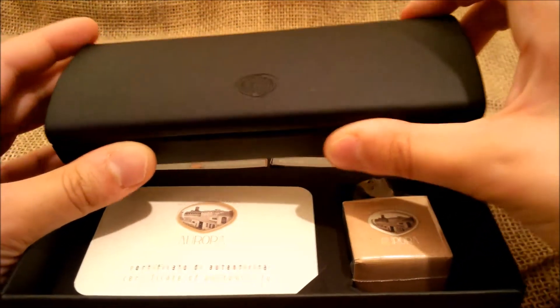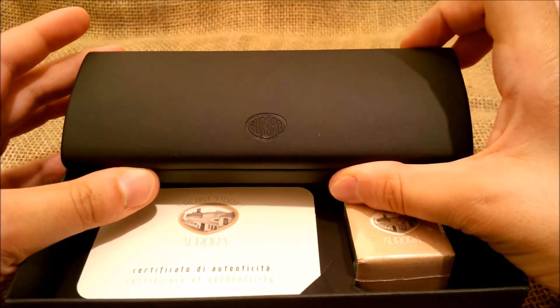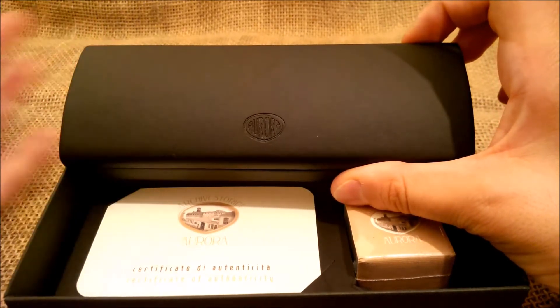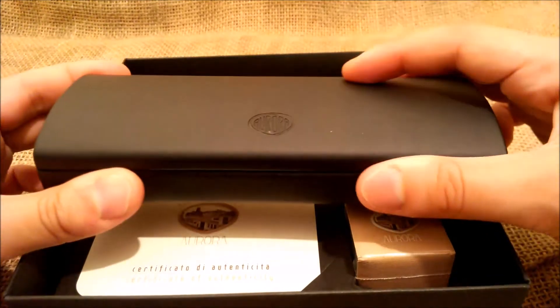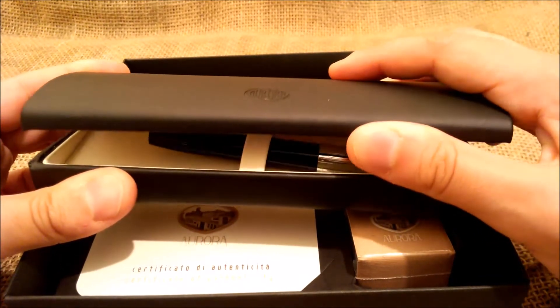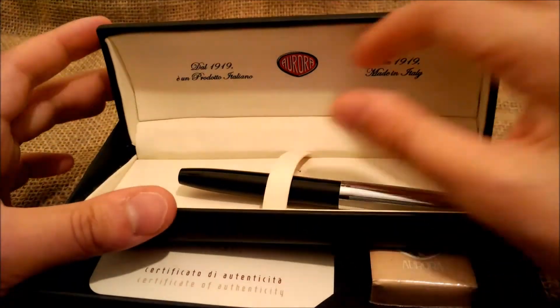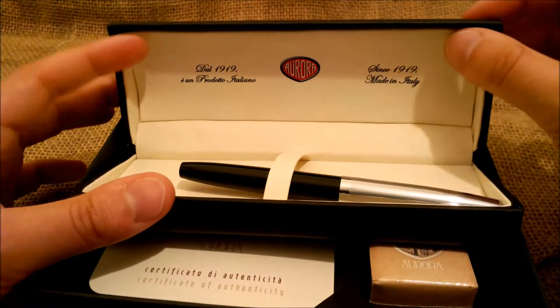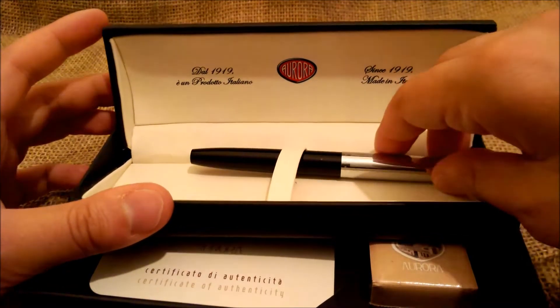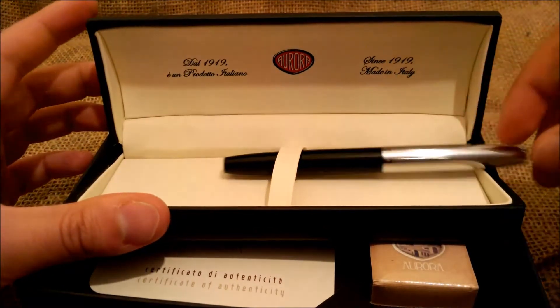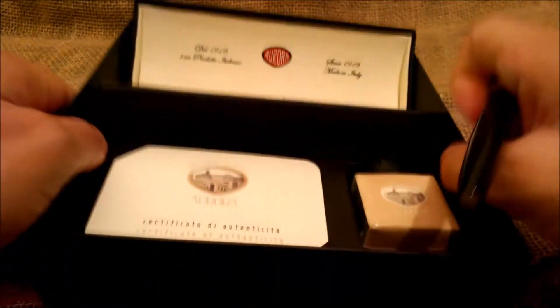First of all, the box is almost the same as the box of the burgundy and gold Duo card, but this one for the black and chrome Duo card is almost the same, but the inside is white instead of black. Here we have the pen and we will take this out.